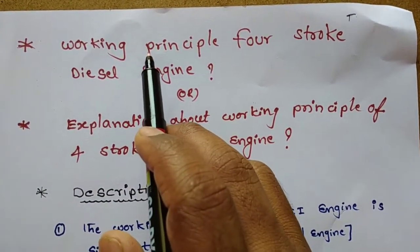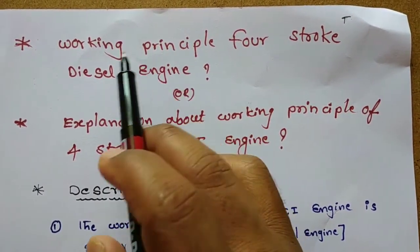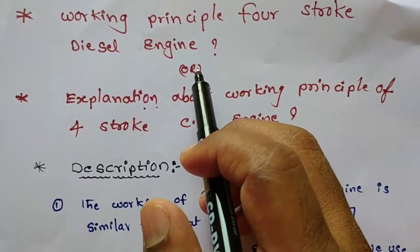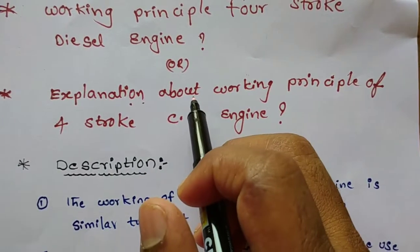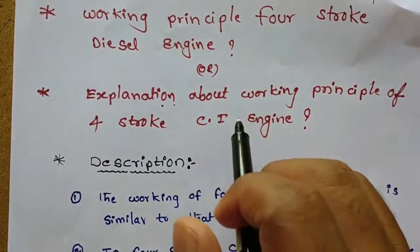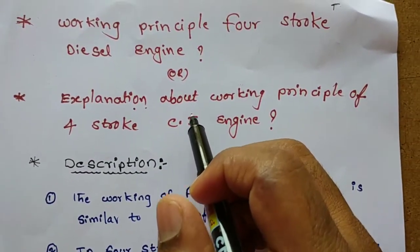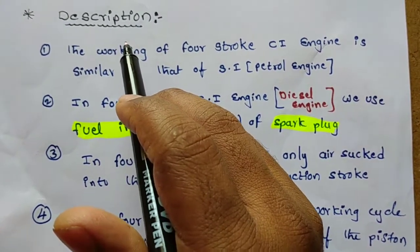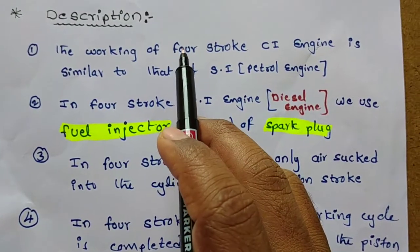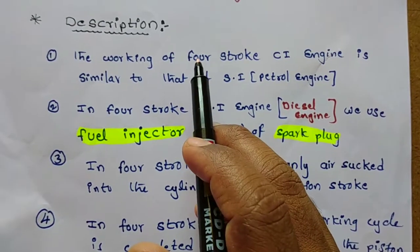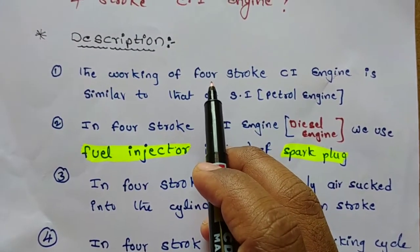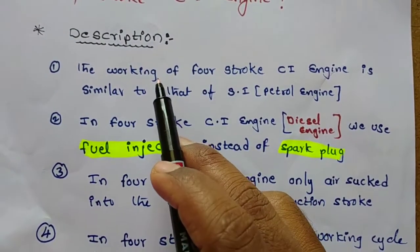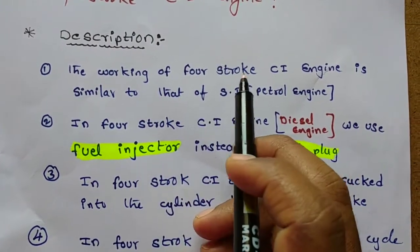Good morning students. In the previous class we discussed the working principle of the four-stroke petrol engine. Now in this class we are going to discuss the working principle of the four-stroke diesel engine, also called the CI engine. The question may be phrased as: explain the working principle of the four-stroke CI engine. The working of a four-stroke CI engine is similar to that of an SI engine.